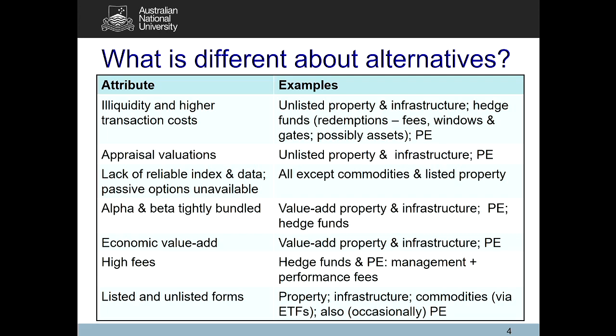When we talk about transaction costs associated with illiquidity, the first thing to think of is a liquidity premium — an additional return you should get given the illiquidity risk. Because illiquidity brings the risk that you might not be able to sell the asset, you should get a higher return to compensate. You don't always get it — unlisted property, for example, might not have a meaningful illiquidity premium in reality. If you're selling an illiquid asset, you'll typically have to sell at a discount, and if buying, pay a premium.